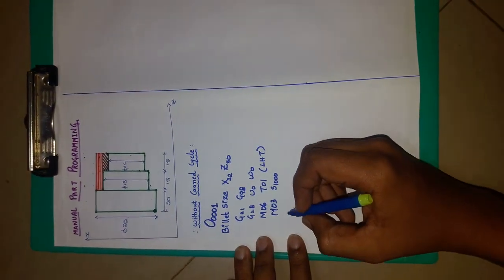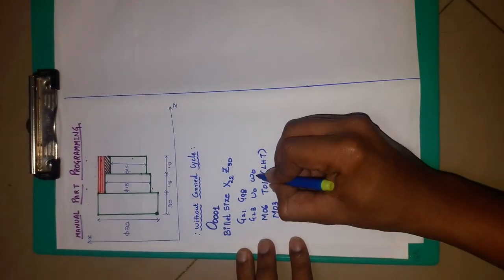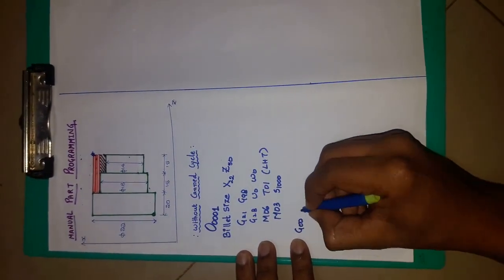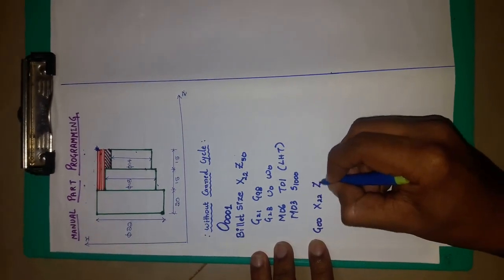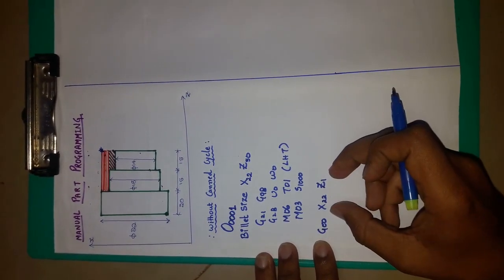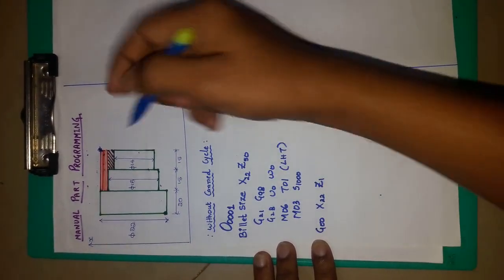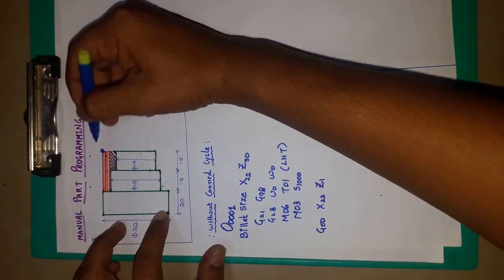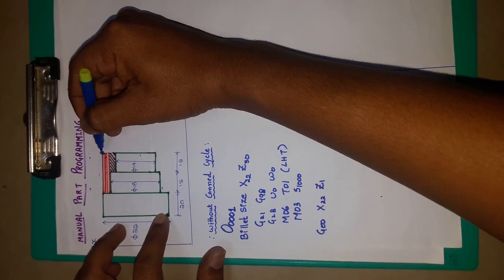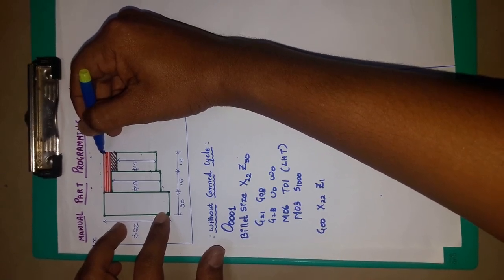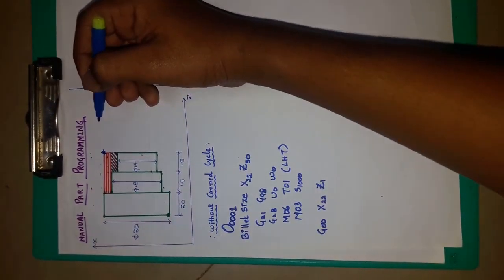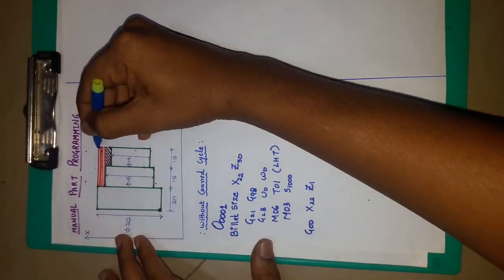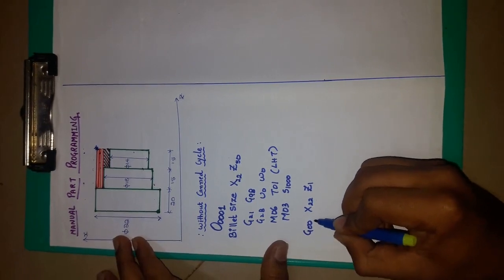Now I am going to bring the tool from the home position to the first tool entry point, which can be done using G00 X22 Z1. I am giving this dimension because as the workpiece is rotating on the spindle, we have to bring the tool just in front of the workpiece, or else the tool will get damaged in practical use. The tool is brought from home position to the first tool entry point using rapid traverse code G00.